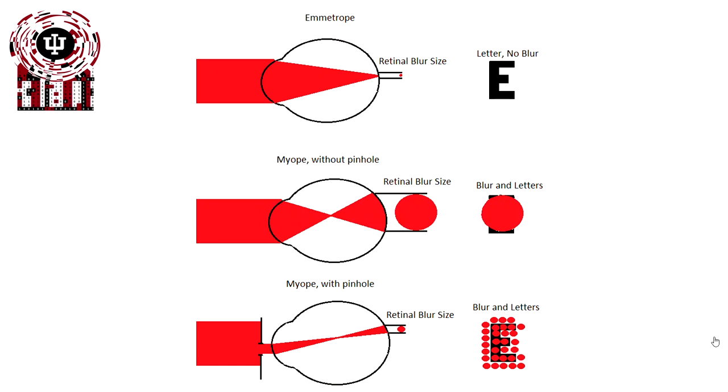Here we have three examples: an emmetrope, a myope without a pinhole, and a myope with a pinhole. At the top, the emmetrope is focused on the retina, so that focal position has a very small spot size, so the retinal blur is very small. That's what lets us resolve letters or different objects out in space.